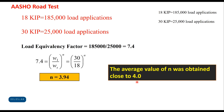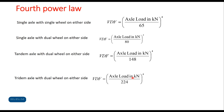That is how the fourth power law is used to calculate vehicle damage factor for each load. For a single axle with single wheel on either side, VDF = (axle load in kN / 65)^4. For a single axle with dual wheel on either side, VDF = (axle load in kN / 80)^4. For a tandem axle with dual wheel on either side, VDF = (axle load in kN / 148)^4. This is called the fourth power law, and it is extensively used in Indian conditions and in many other countries.